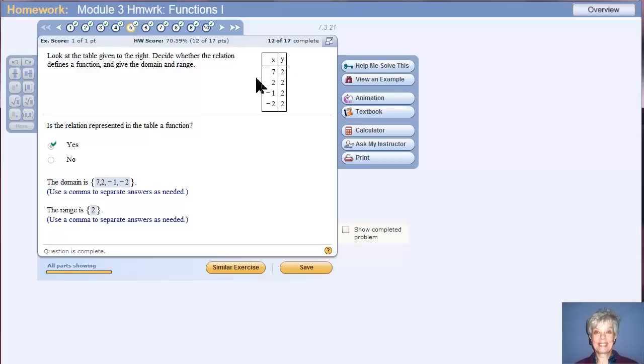Alright, here we have an x and a y table. Notice that all of the x coordinates occur only once. The y coordinates are all the same, but that doesn't matter. That's okay. The fact that none of the x coordinates repeats means that each of these individual x coordinates is only paired up with one y coordinate. If you had a mapping, there would be one arrow going from the 7 to 2, one arrow going from the 2 to 2, one arrow going from negative 1 to 2, and one arrow going from negative 2 to 2. The fact that only one arrow would be going from each of the x coordinates means that this is, yes, a function. Look at the domain. The domain consists of all the numbers on the right and the range consists of only one number.